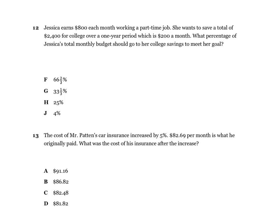Number twelve: Jessica earns $800 each month working a part-time job. She wants to save a total of $2,400 for college over a one-year period, which is $200 a month. What percentage of Jessica's total monthly budget should go into her college savings? There's one number we don't really need — why don't we need the $2,400? That's extra information. We need what she makes a month. You're going to use part over whole equals percent over 100.